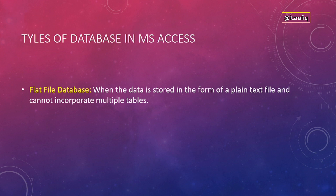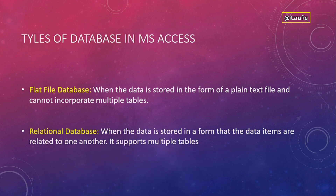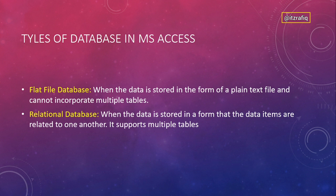Types of databases in Access: the first is Flat File Database, where we store information in the form of plain text in just one table — we cannot break down the data into smaller tables. The second is Relational Database, where we store data in the form of tables. Here we get more advantages, including the ability to create multiple tables, which is not possible in a flat file database.